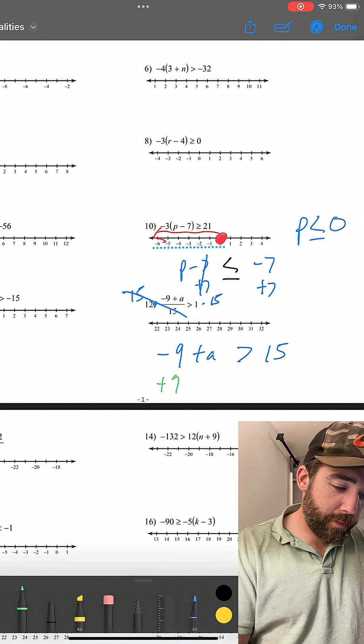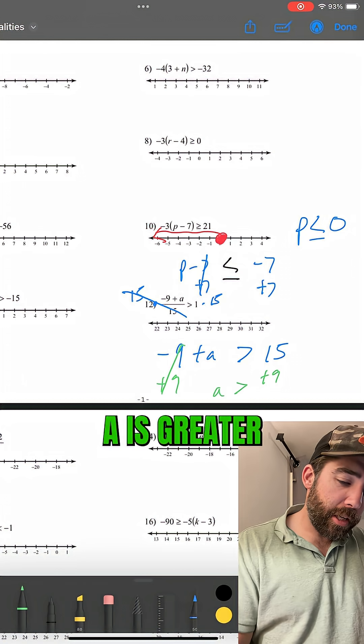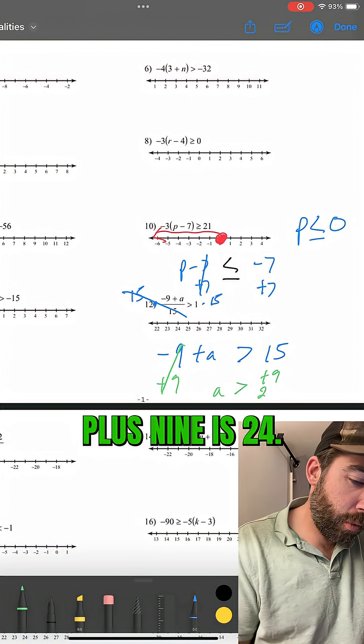Let's add 9. Why not in green? Because I love green. A is greater than, 15 plus 9 is 24.